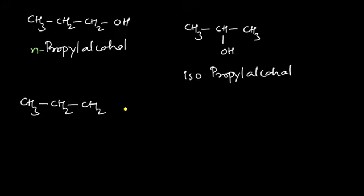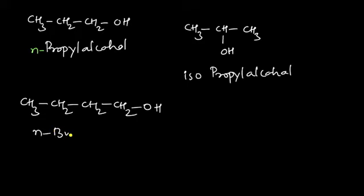Taking one more example: CH₃CH₂CH₂CH₂CH₂OH — there are four carbons, so it is butyl alcohol. It is a linear, non-branched chain, therefore it is called n-butyl alcohol.